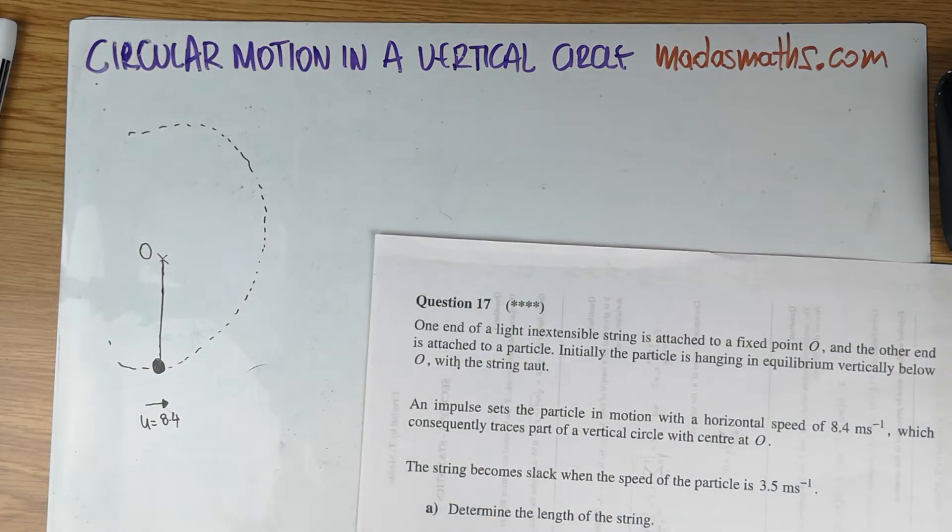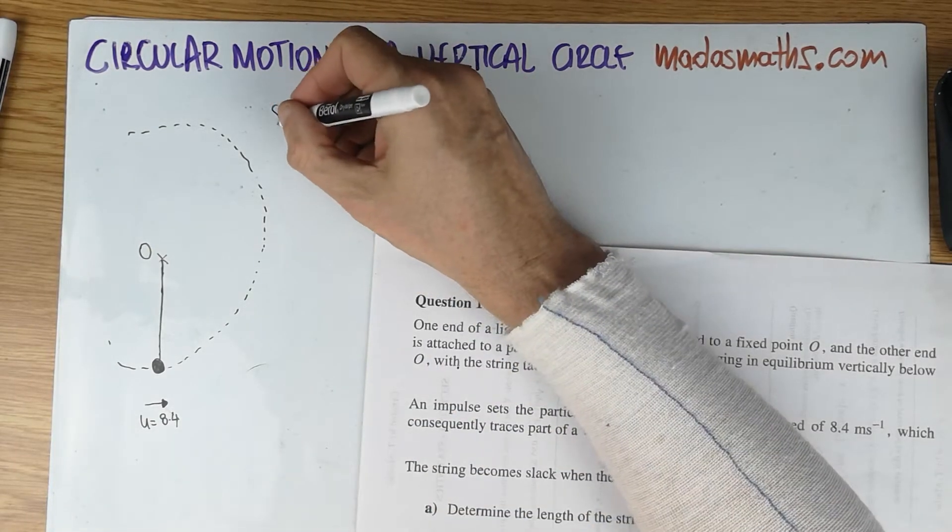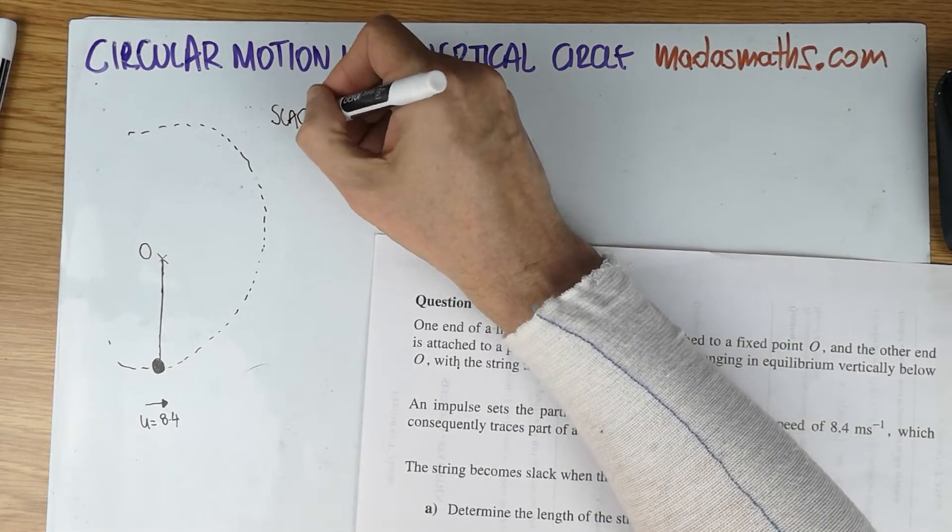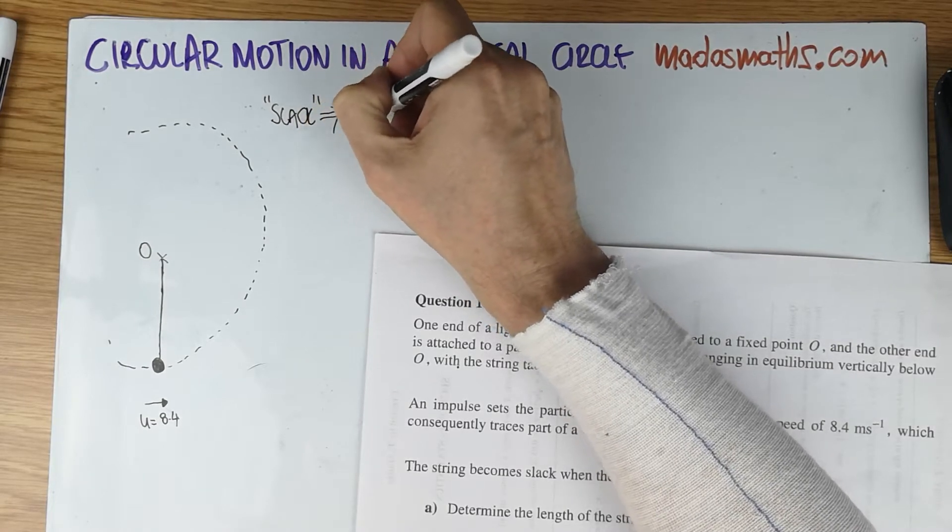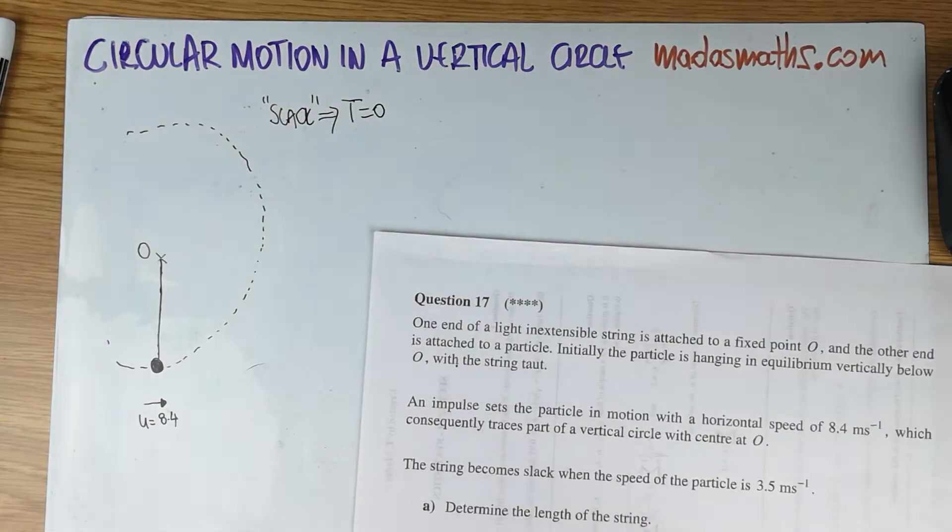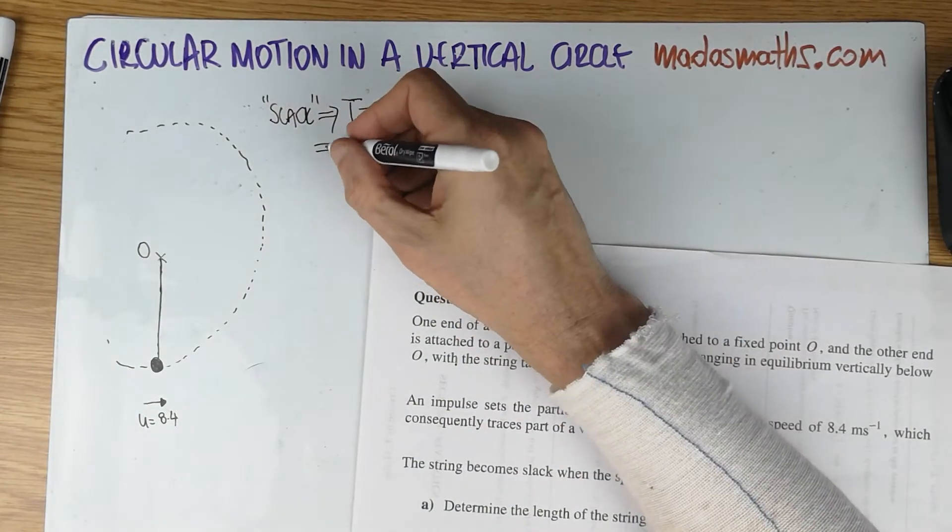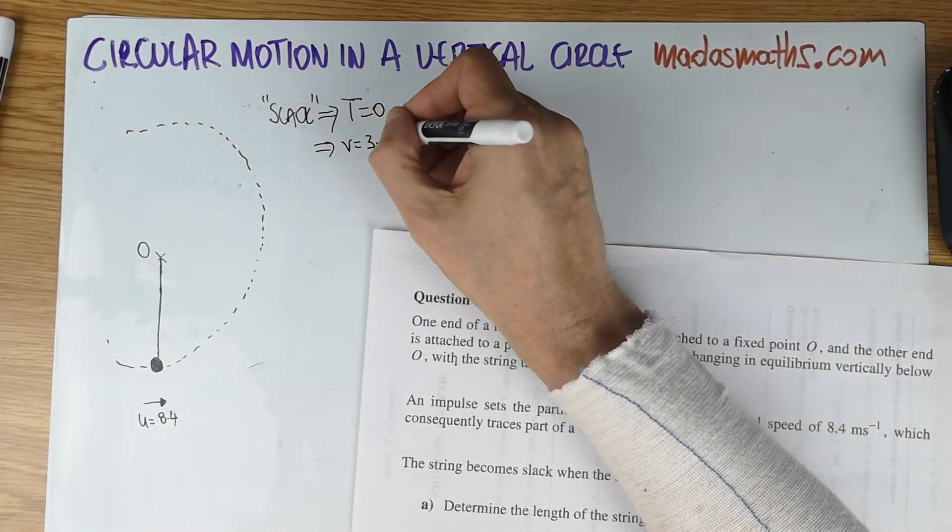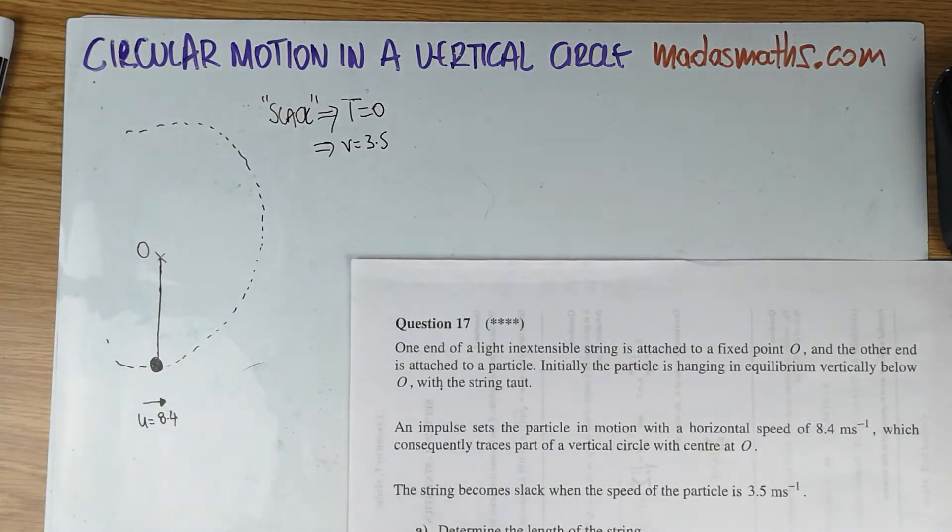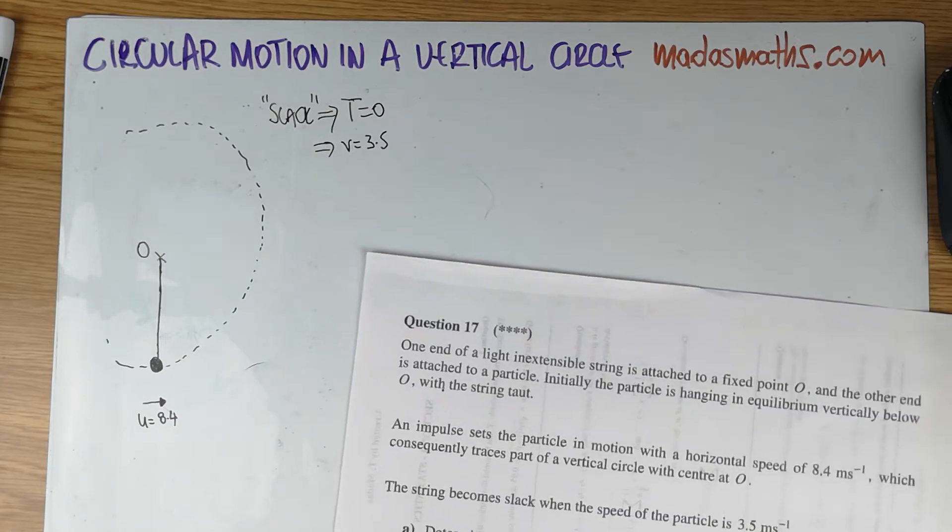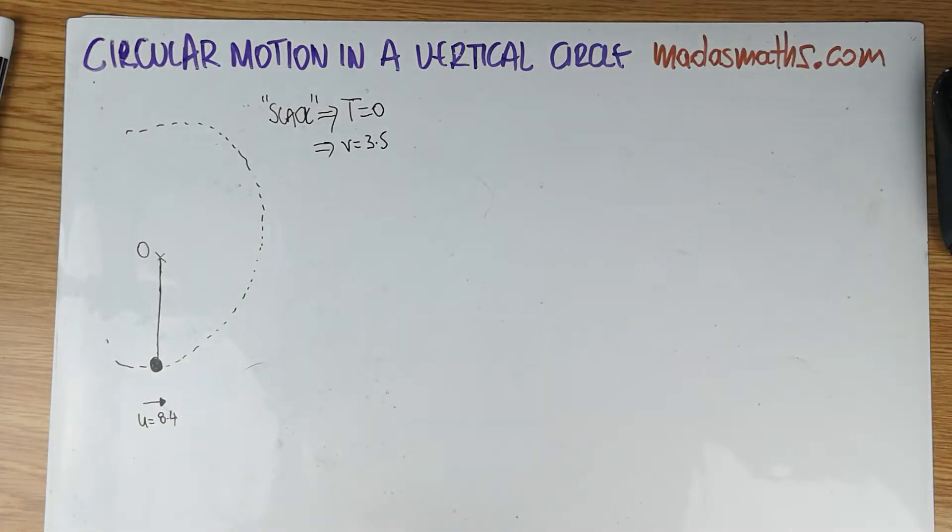And it says the string becomes slack. Slack means tension is zero. And this happens when the V is 3.5. So for this, now the question says, determine how long is the string?